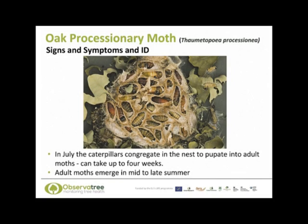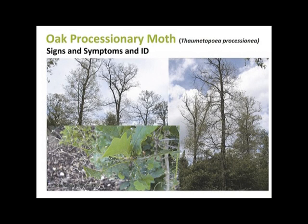Once the caterpillars have gone through all their larval instars they gather together in their nest to pupate, which usually takes about four weeks, and the adult moths then emerge in mid to late summer. A badly infested oak tree will have a greatly reduced canopy because of severe defoliation from the feeding larvae. If you look closely at the leaves themselves you can see that they have been skeletonised — the leaf veins or skeleton remain but all the soft tissue has gone. This feeding damage is quite distinctive and is a good sign to look out for.